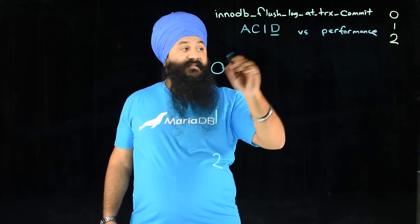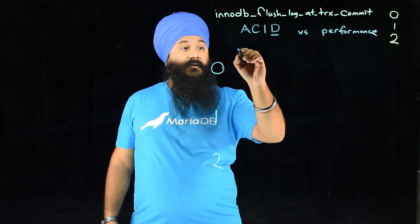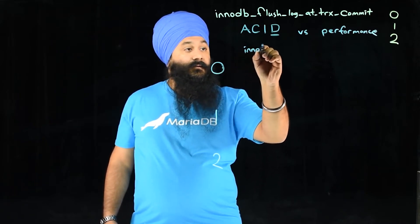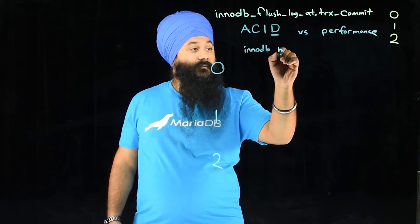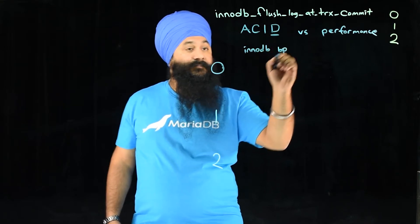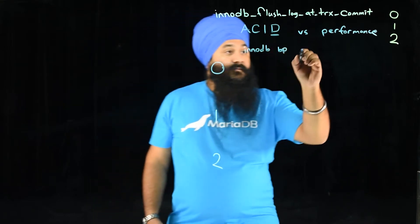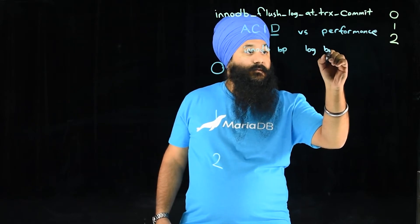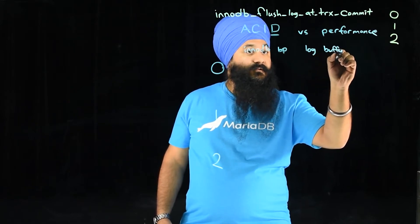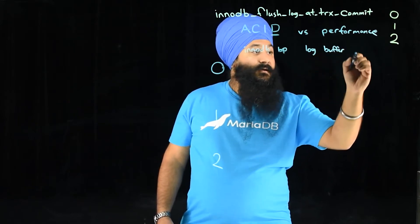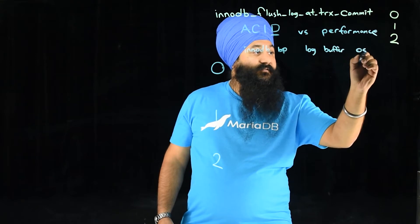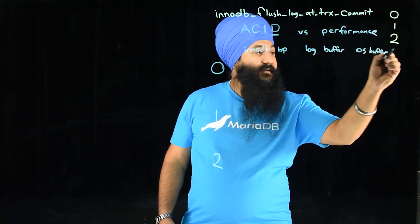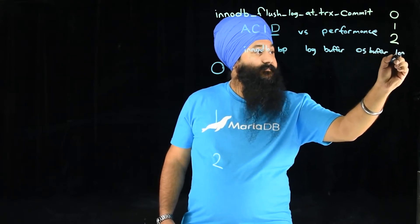The specific path of a query goes through the InnoDB buffer pool — we'll put BP here — then the log buffer from the InnoDB redo logs, then the OS buffer, and finally to the log file.